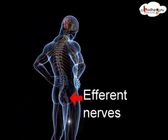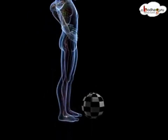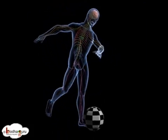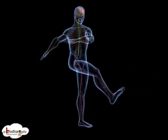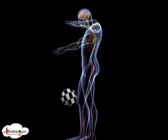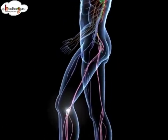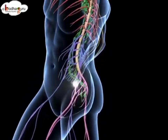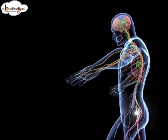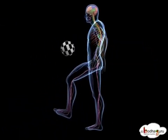the muscle through efferent nerves, and that response will make the leg muscles contract to kick the ball. Though different sense organs work in different ways, they all keep sending information about the changes in the surroundings that trigger responses from the central nervous system.